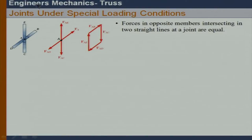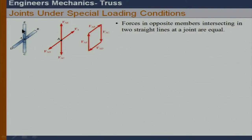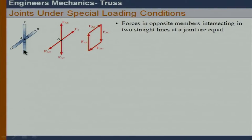Under special conditions, when four members meet at a joint intersecting in two straight lines, we can say force in AD must equal force in AB, and force in AE must equal force in AC. This is true based on both the graphical approach and the equilibrium conditions. When analyzing a truss, we should use these special conditions to immediately get feedback about what kind of relationship exists between forces.